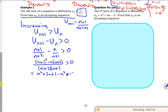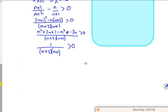That simplifies to n squared plus 2n plus 1 minus n squared minus 2n all over n plus 2 n plus 1, bigger than 0. That gives us 1 over n plus 2 n plus 1 bigger than 0.